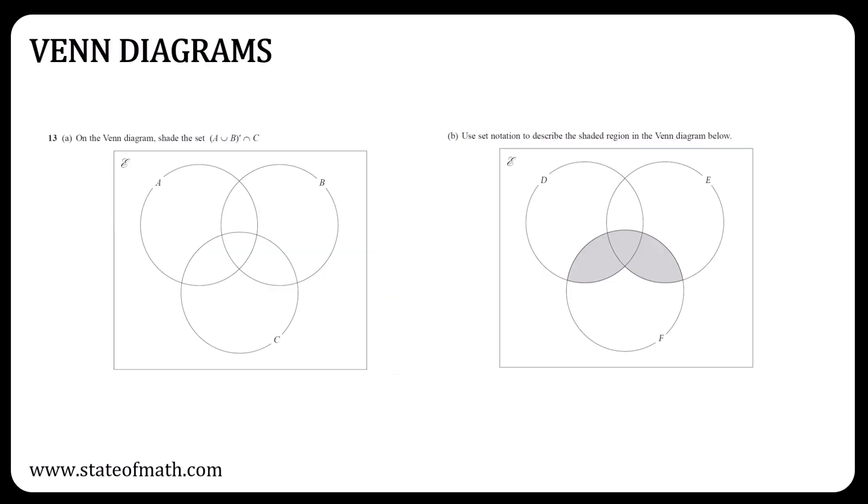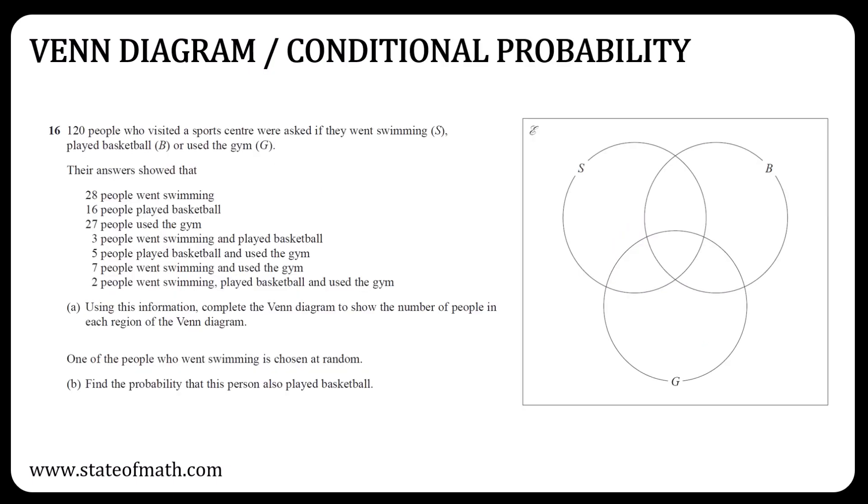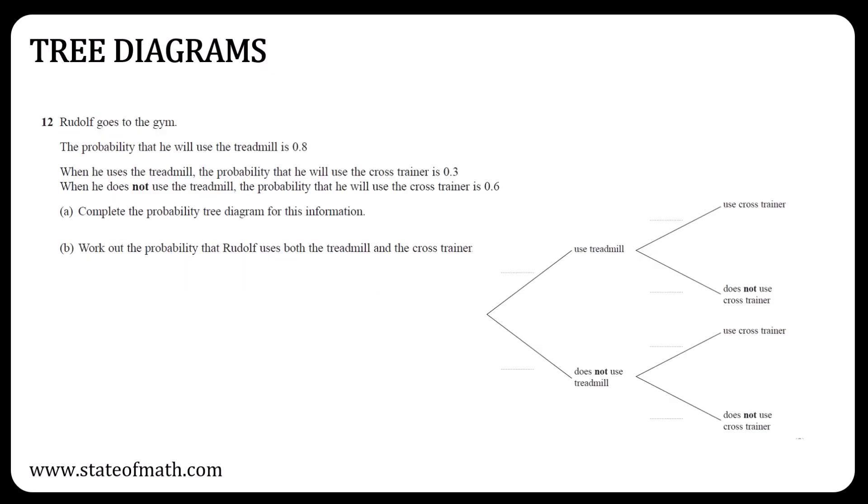There was a question with sets in Paper 1 HR, but it did not involve Venn diagrams, so get ready for one. You can also get a word problem with a Venn diagram in three circles. It can even include a conditional probability part. Finally, a tree diagram is also an option, although a bit unlikely since there was a probability question in Paper 1 HR. If they have a tree diagram question in Paper 2 HR, my guess would be that it would be a simple question with a tree diagram drawn, and you would have to complete missing probabilities.